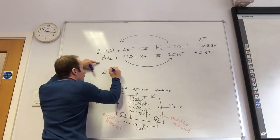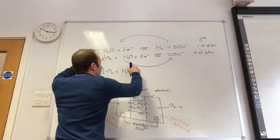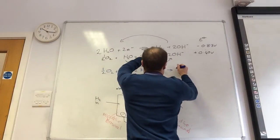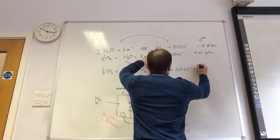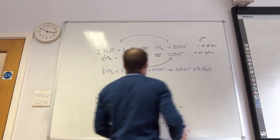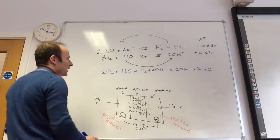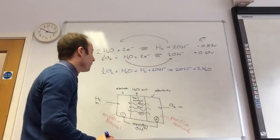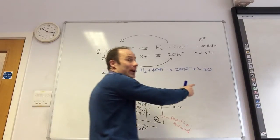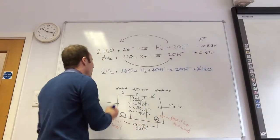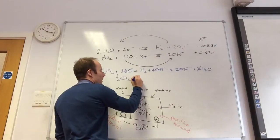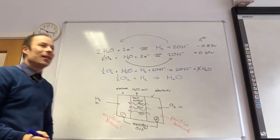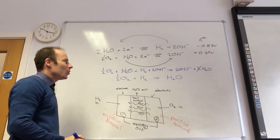So I'll keep this one the same: ½O₂ + H₂O + H₂ + 2OH⁻ → 2OH⁻ + 2H₂O. We can cancel this down — I've got 2OH⁻ on both sides, and I've got H₂O on one side and 2H₂O on the other, so I can cancel that down. Overall: ½O₂ + H₂ → H₂O. Just like that.